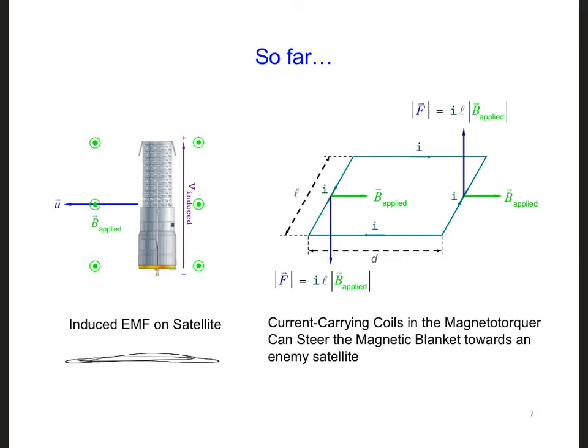Then we also determined that we can steer something, maybe a metallic blanket, towards an enemy satellite using magnetotorkers, comprised of three separate current-carrying loops. And the steering is achieved by controlling how much current flows through each of the loops, which in turn controls how much torque that each loop feels in the Earth's magnetic field.